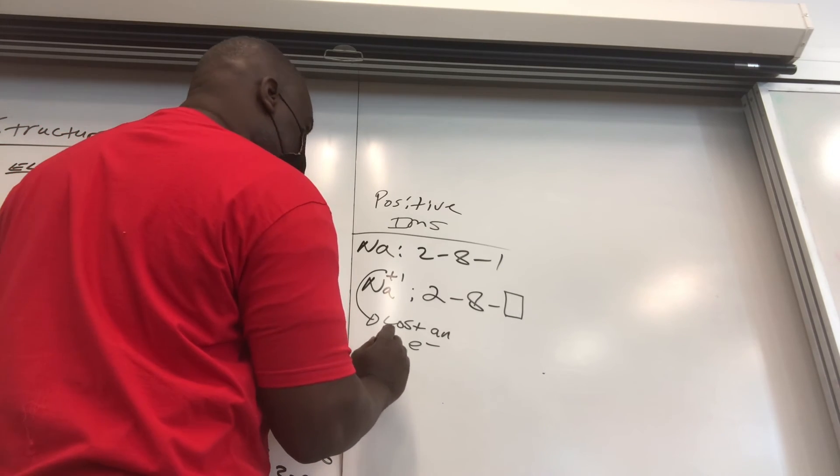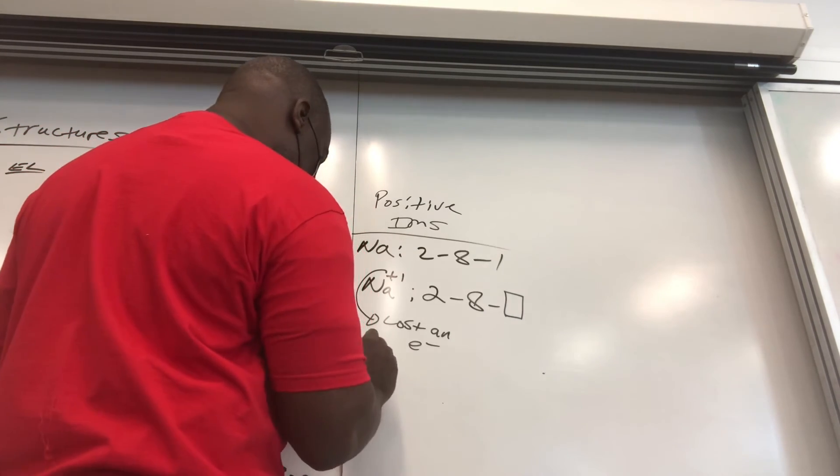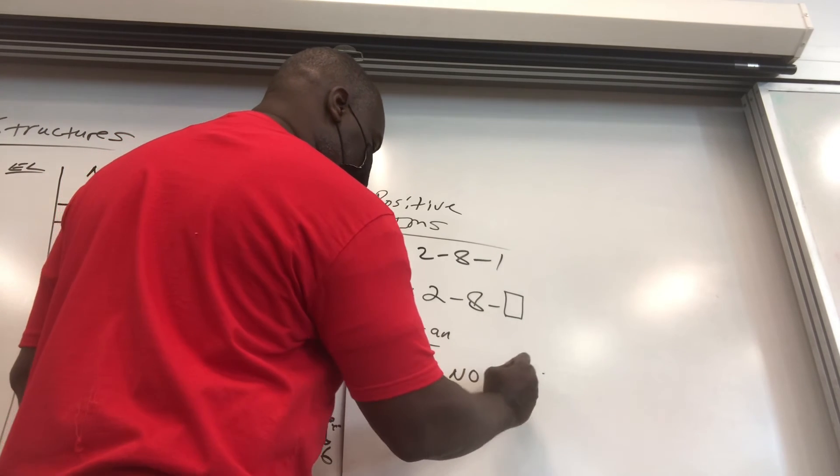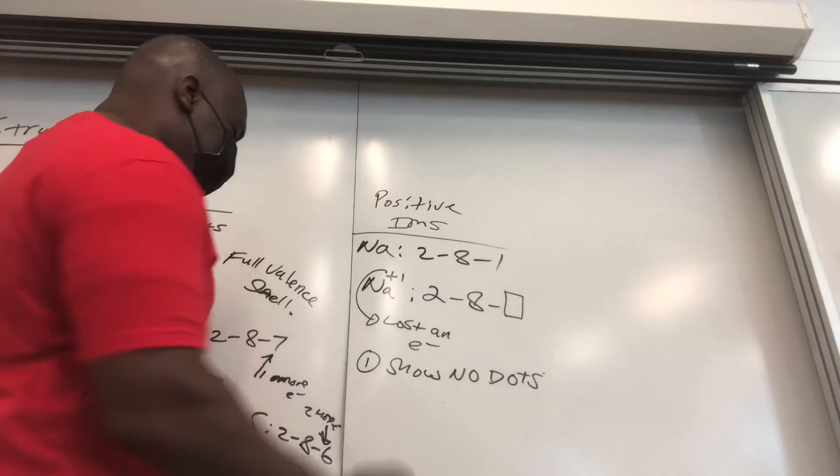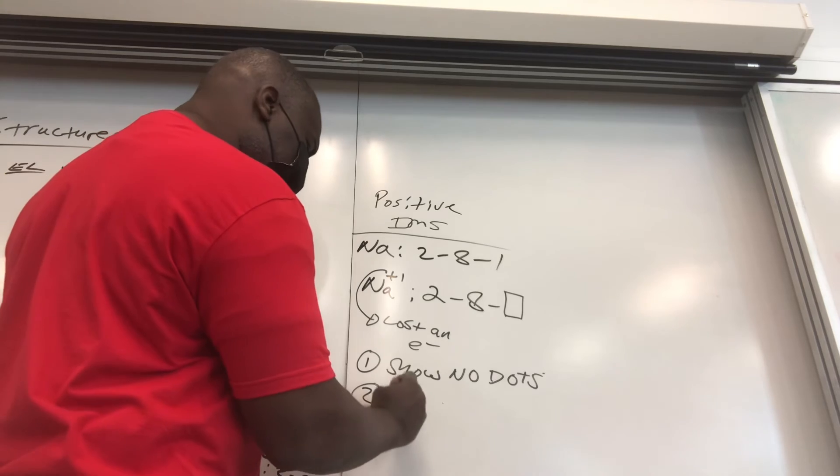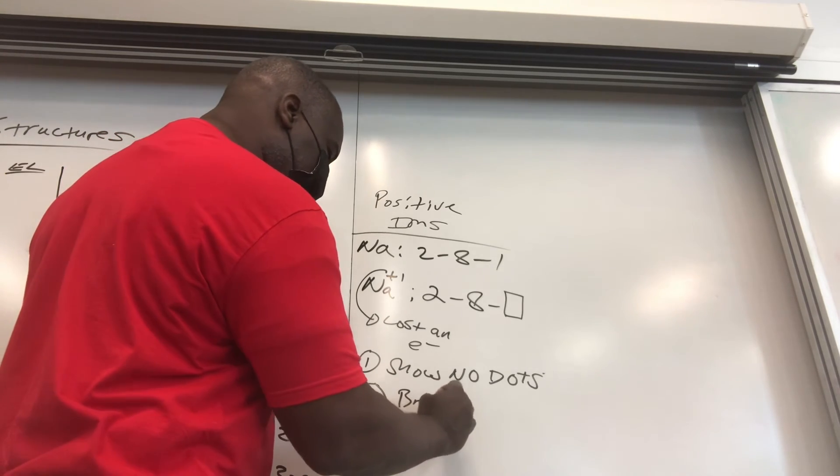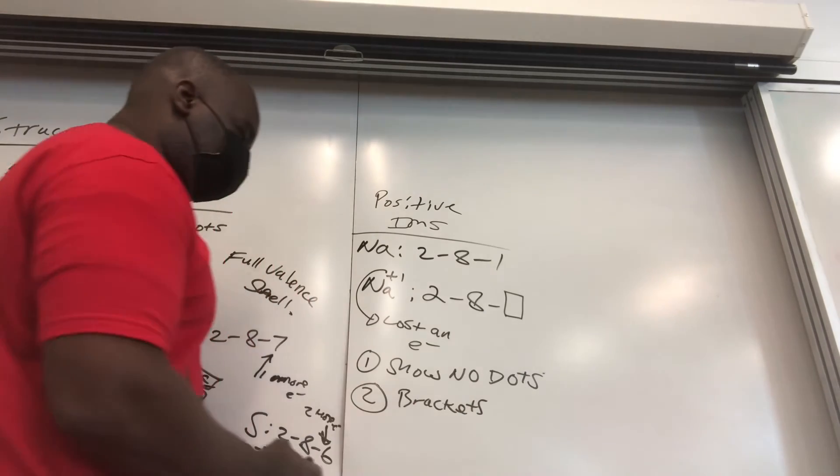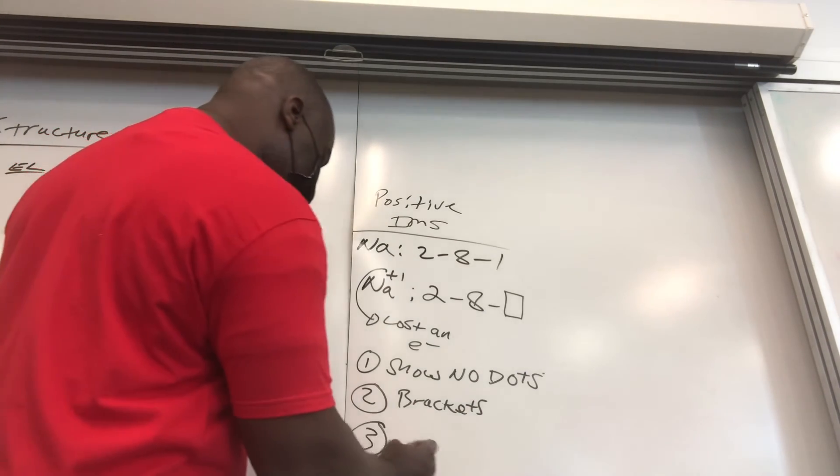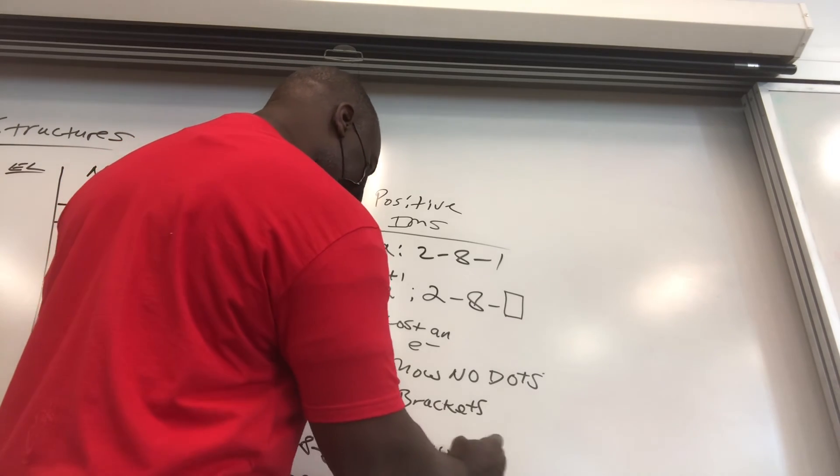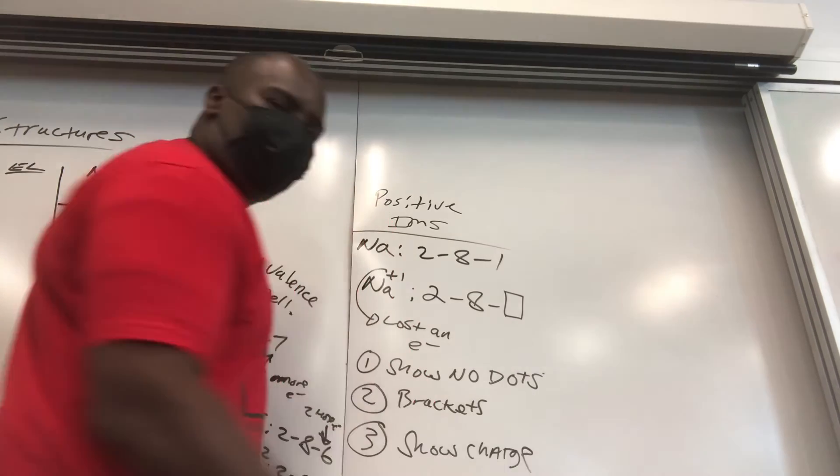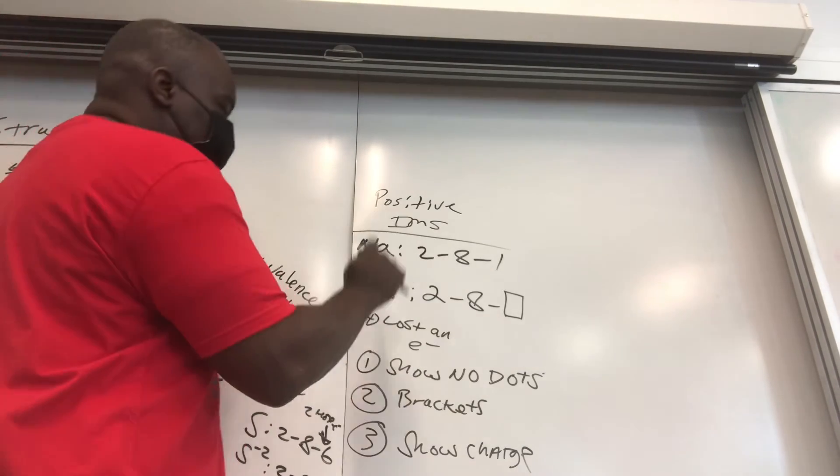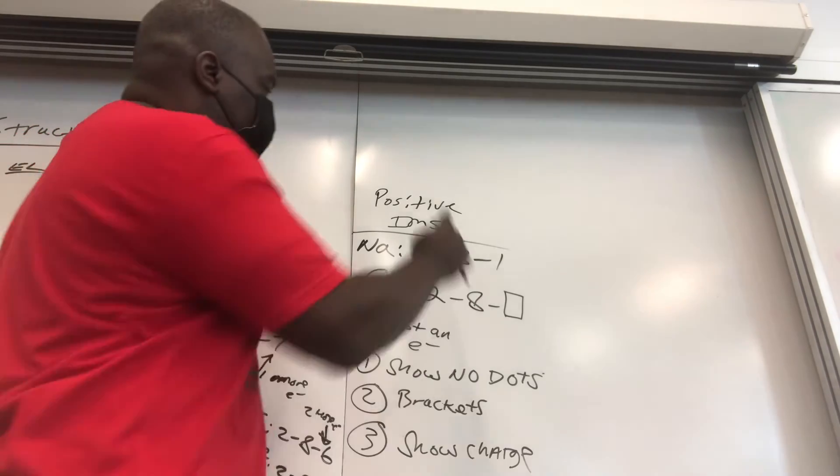So you reflect that when you do the dot structure for positive ions. So let's write the rules down. For positive ions: One, show no dots. No dots. Now number two is a little controversial. I tell my students show brackets. Some teachers, some textbooks say don't use brackets, but I just show the brackets. But three is important. You must also show your charge. If you're an ion, you carry a charge. There's no debating about it.